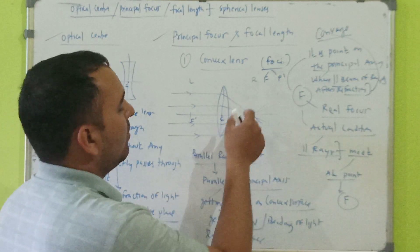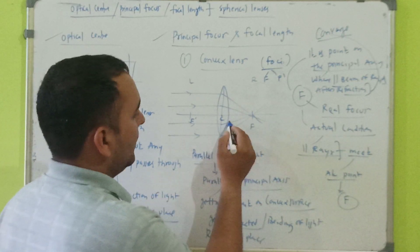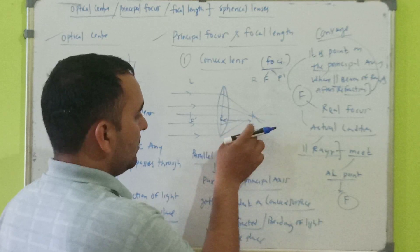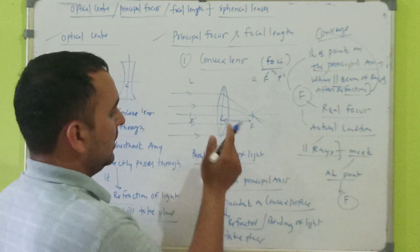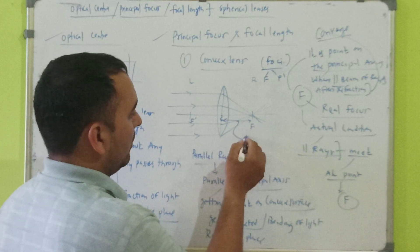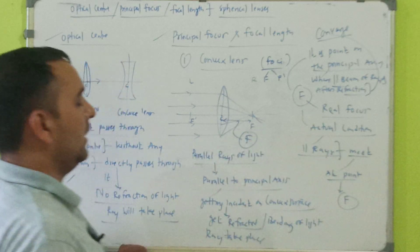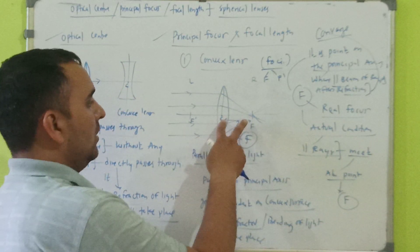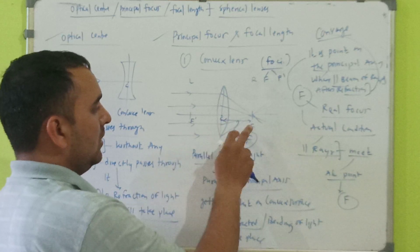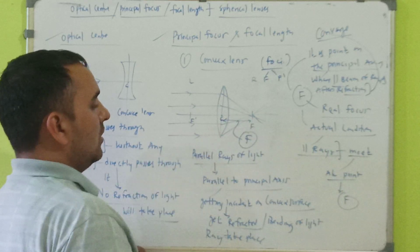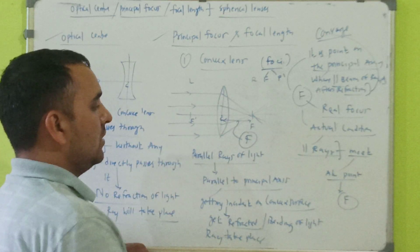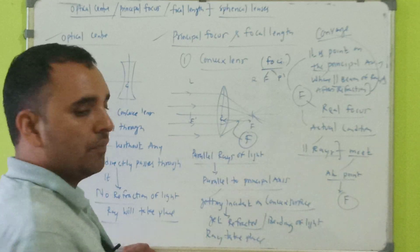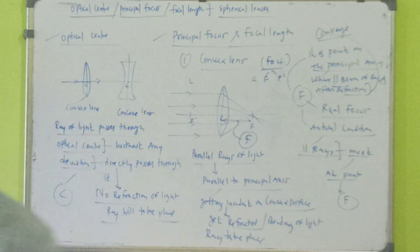Now, what about the focal length of a convex lens? The distance between the principal focus and the optical center is your focal length. So focal length is the distance between the optical center and the principal focus of a convex lens.